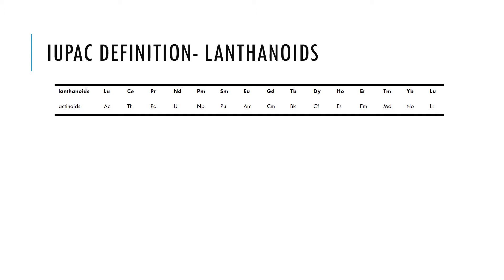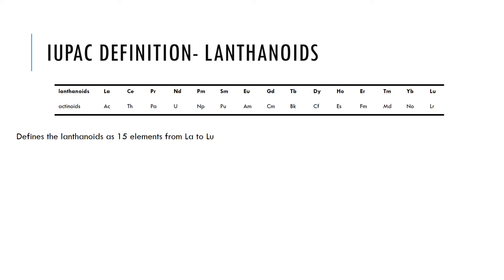Let's develop the definition further and consider the IUPAC definition of the lanthanoids — the International Union of Pure and Applied Chemistry. The lanthanoids run from lanthanum through to lutetium, the first row of that F block series. The IUPAC definition recognises the fact that lanthanum, with the electron configuration shown, doesn't actually have any 4f electrons, but is essentially a prototype for the elements that follow in which that 4f subshell is progressively filled.